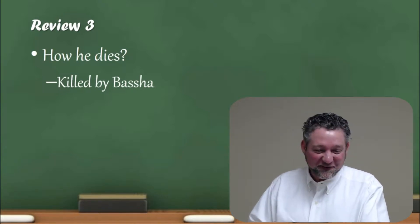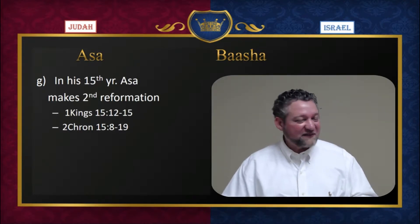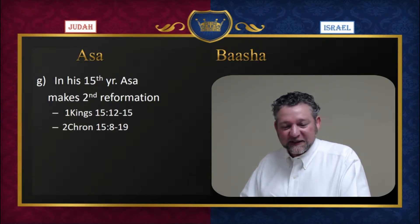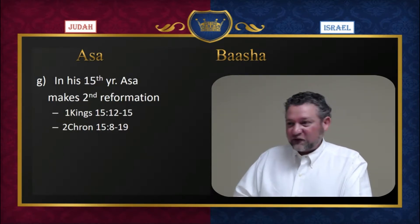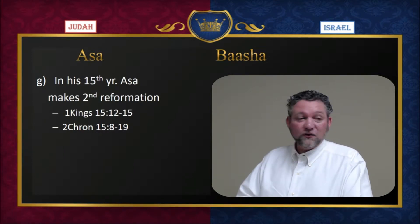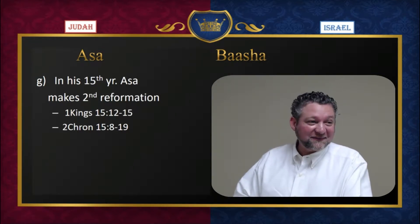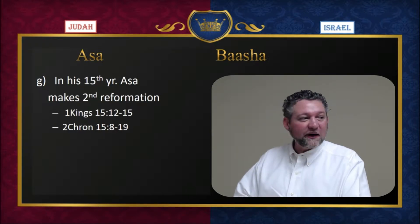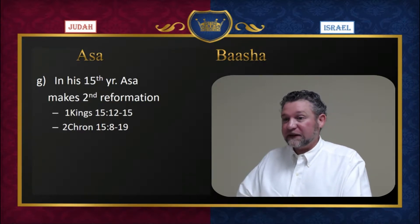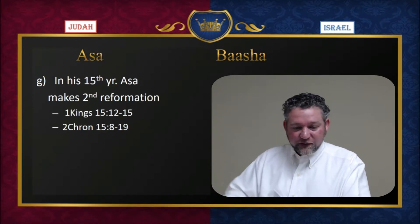All right, so that catches us up with the review from last week. Now we're back to Asa in the 15th year of his reign — he makes a second reform. He starts cleaning things up again. This is good, and you have to do that periodically through your life. You might get things straightened up and think you're doing well, and just as time goes, things happen. Flesh happens. You've got to periodically go do a checkup — go to the Bible and say, what needs cleaning out? What needs reforming? You'll have to be doing that your whole life. Here he's doing it with the kingdom.